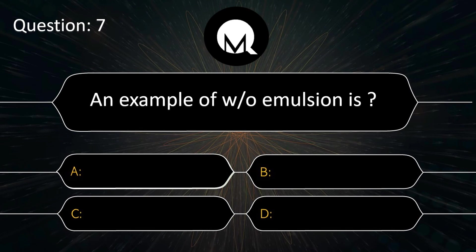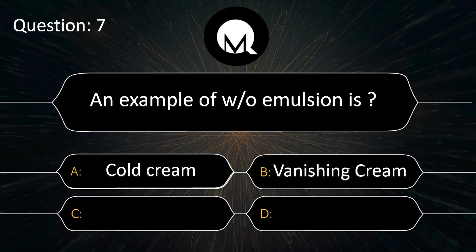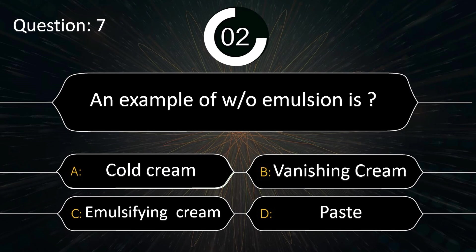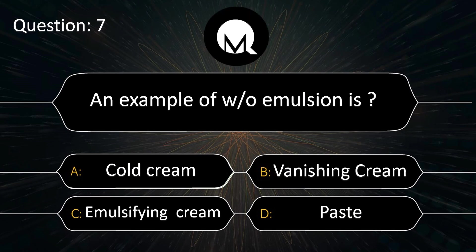An example of a W/O emulsion is: cold cream, vanishing cream, emulsifying cream, or paste? Answer is cold cream.